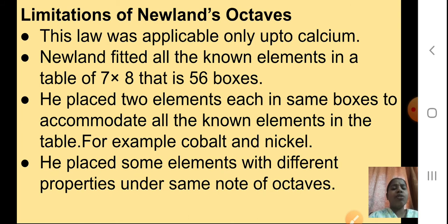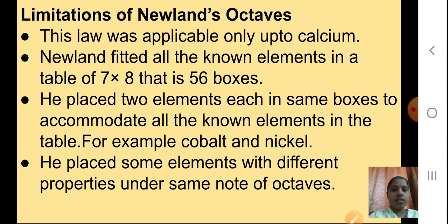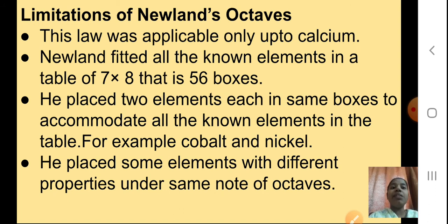However, there were some limitations. This law was applicable only up to calcium — only up to calcium could you see that the first and the eighth element had similar properties. Newland fitted all known elements in a table of 7 by 8, that is 56 boxes. He placed two elements in the same box to accommodate all the known elements — for example, cobalt and nickel were placed in one box.